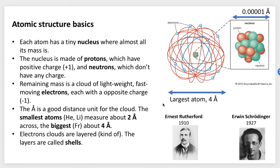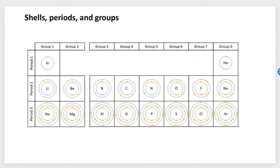Also, the electron clouds are layered in a sense, and the layers are called shells. Each layer gets bigger and bigger, and we call those shells.